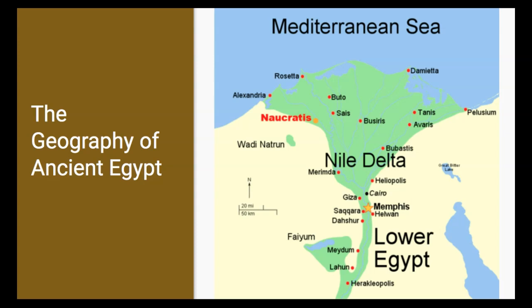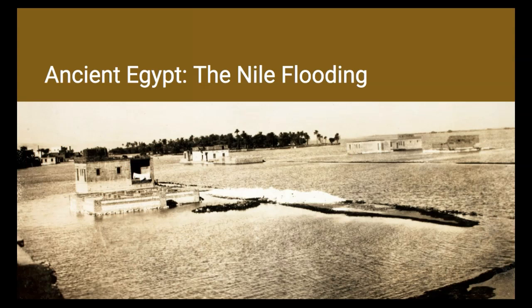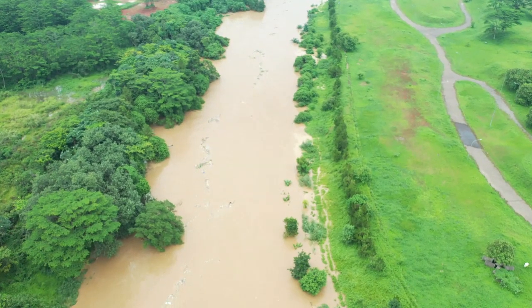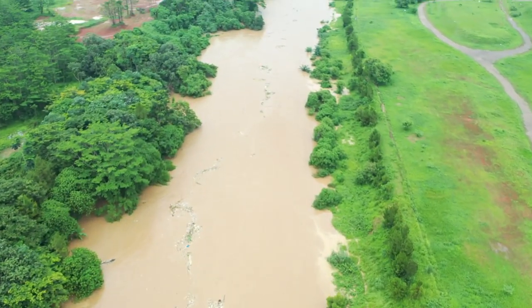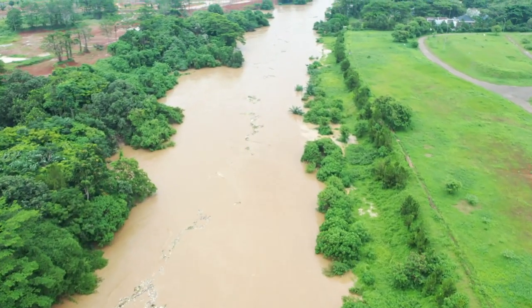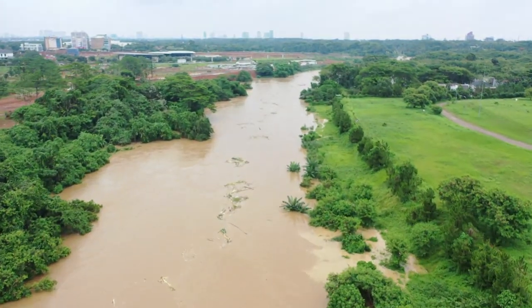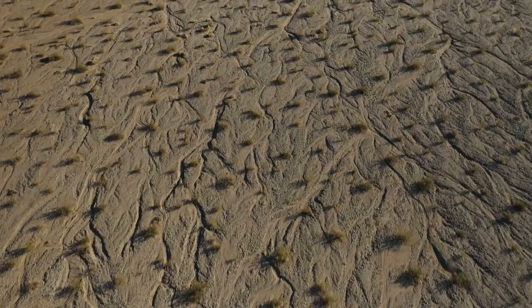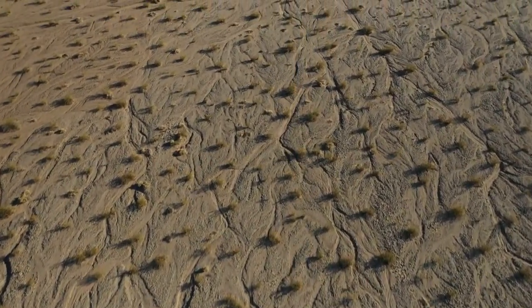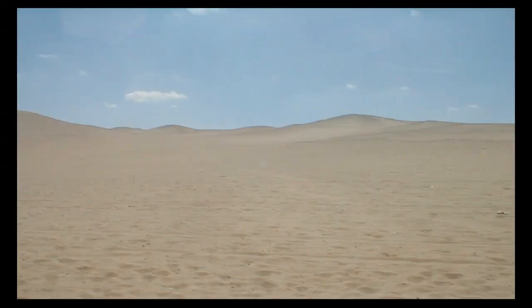The Nile would flood every year, and that provided fertile soil allowing for agriculture. However, the flooding of the Nile could be unexpected and could result in disasters. If the Nile flooded less than usual, thousands would starve, and if it flooded more than usual, farmlands and homes would be destroyed. Egypt's massive hot desert in the west provided a natural barrier of protection for the Egyptians, but it also forced them to live on a very small portion of the land.